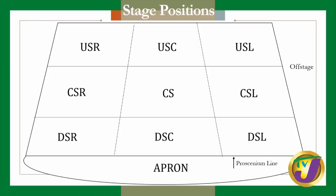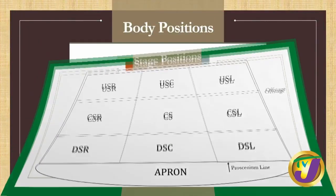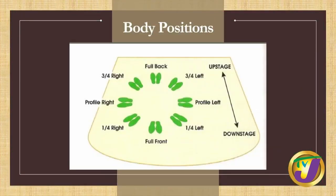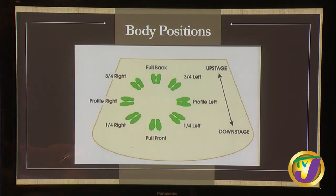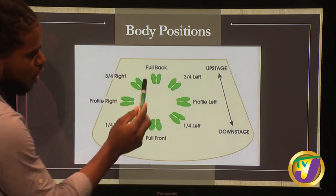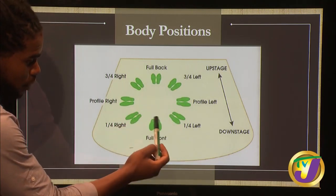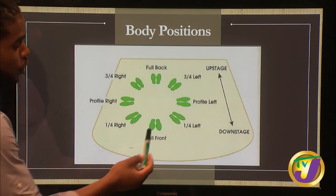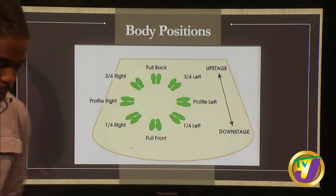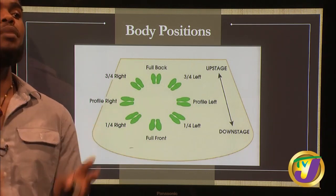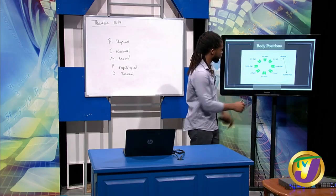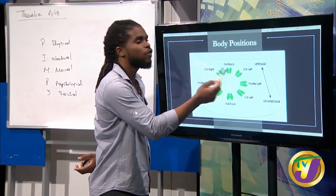There are eight body profiles and we're going to go through them together. The representation shows feet on the floor — front of the feet and back of the feet. The first one is full front: standing on the stage facing the audience. That position is called full front. The opposite is full back — this is the one you don't want to show the audience unless it is intentional.